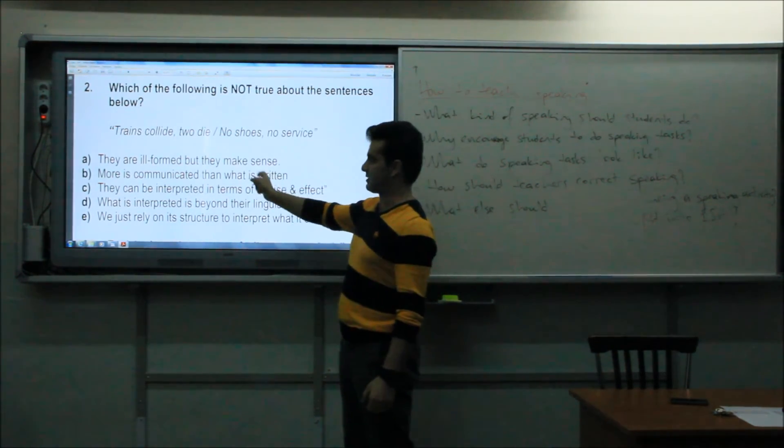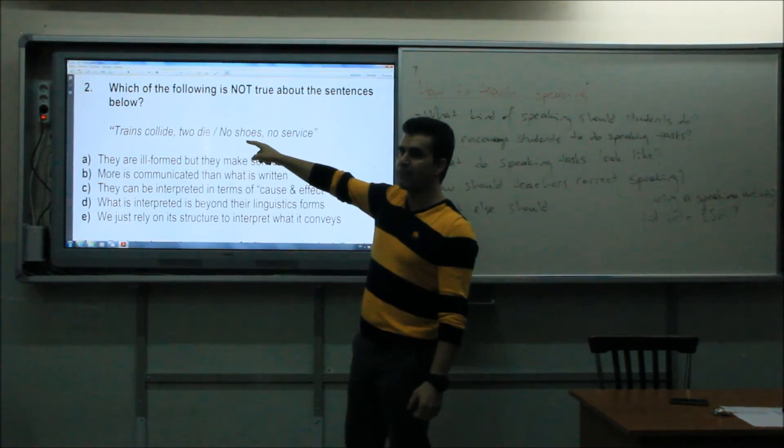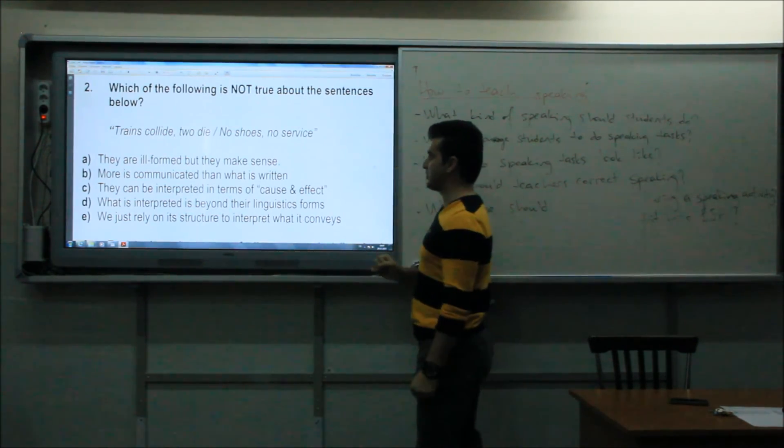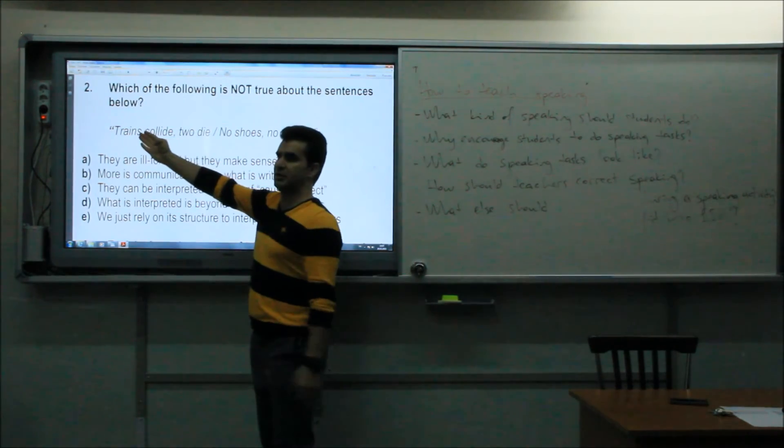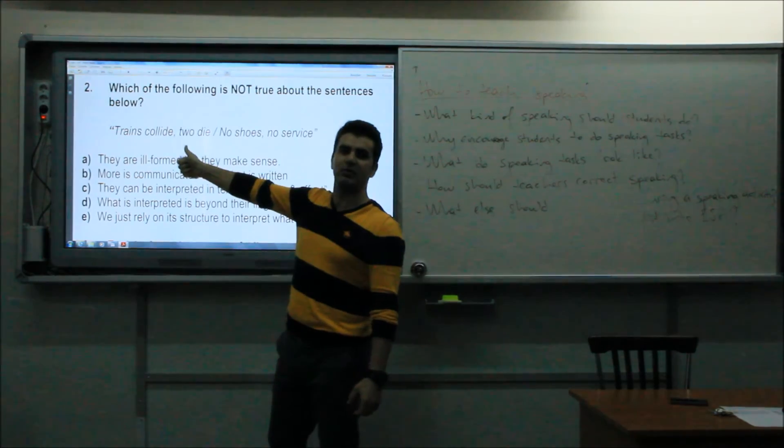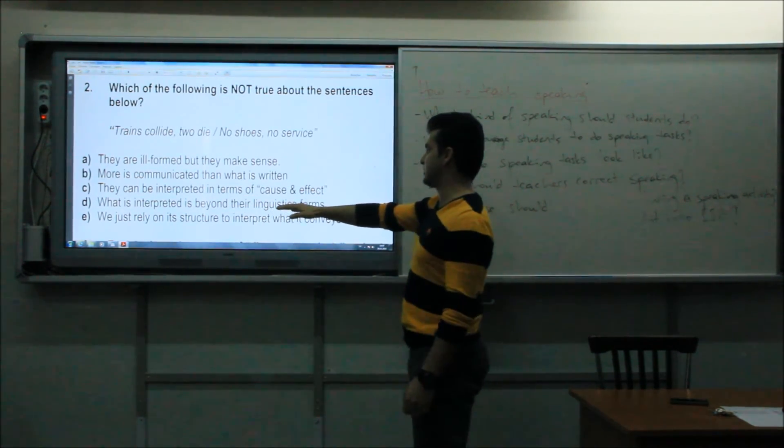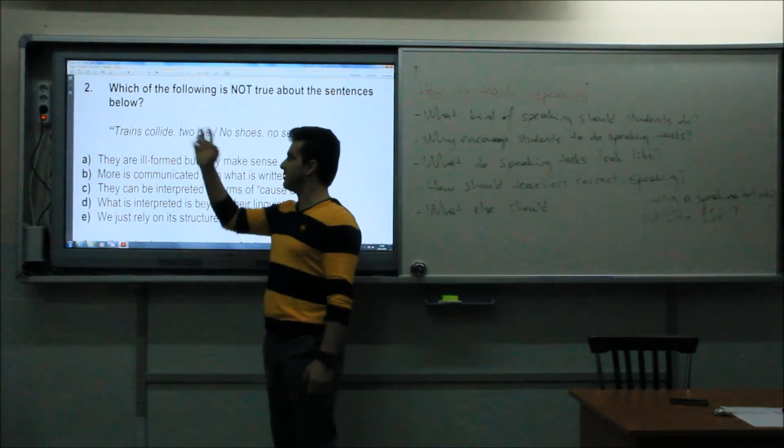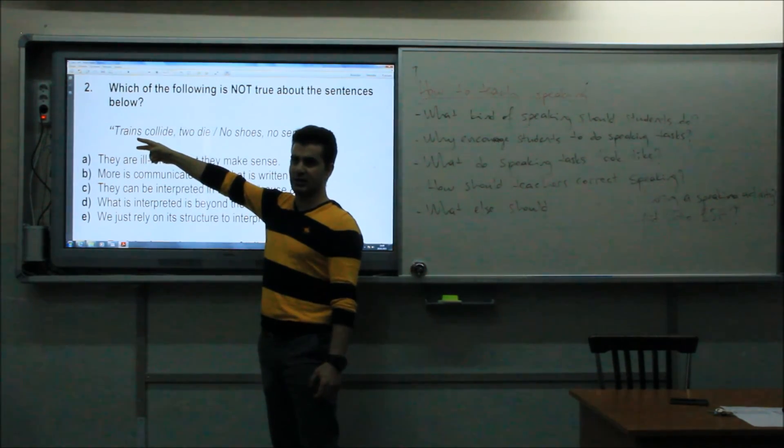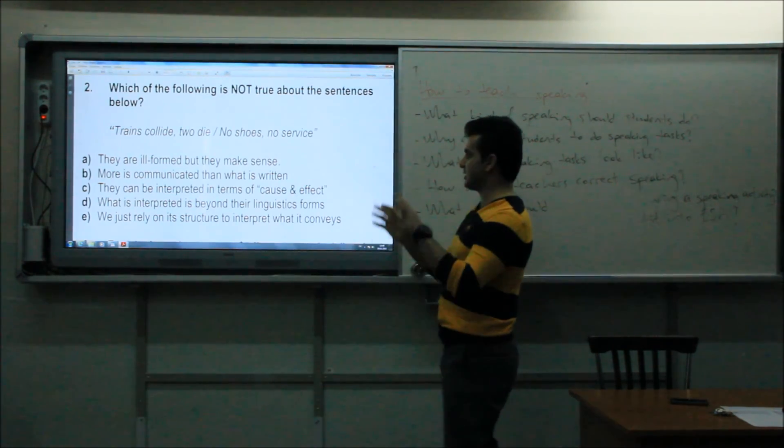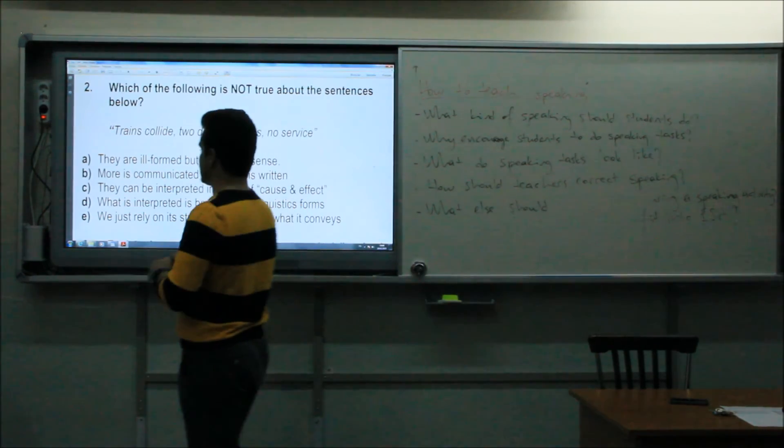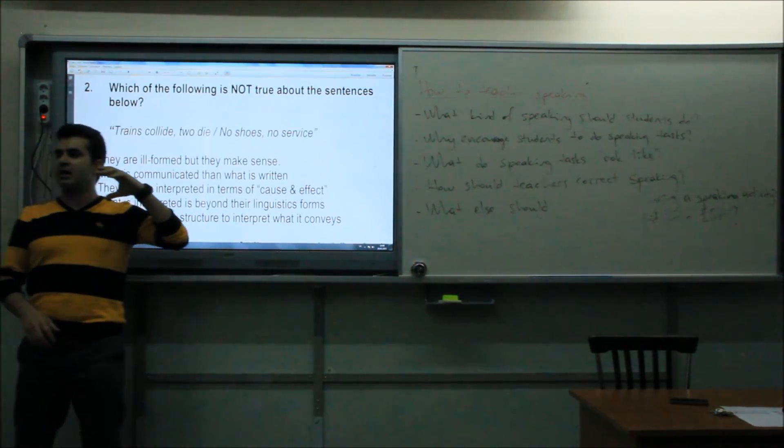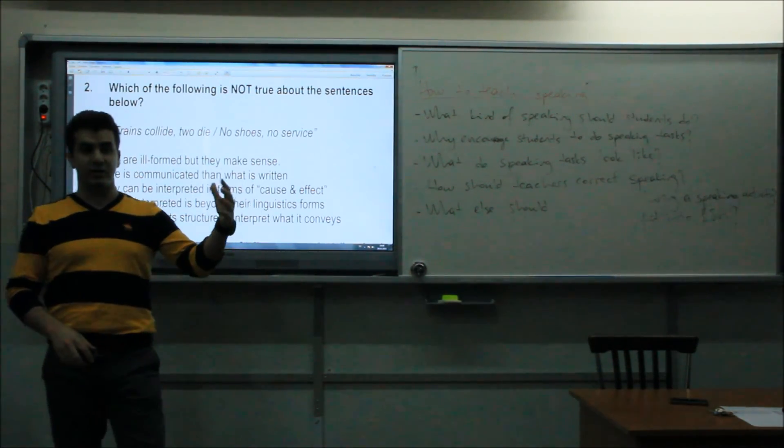More is communicated than what is written. Yes, more is communicated than what is written. Some part of the sentence is not written, but still we can get it. They can be interpreted in terms of cause and effect. Yes, cause, train collision, result, the death of two people. What is interpreted is beyond their linguistic forms. This is the linguistic forms, but we interpret that two people died as a result of this collision, train collision. We just do not rely on this structure. We need to use our extra linguistic information to work out this meaning. Right? And we do that. And of course here there are a lot of factors. We're going to now explain those factors.